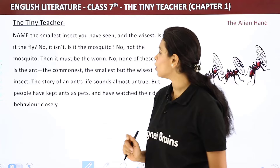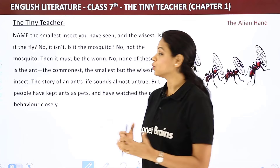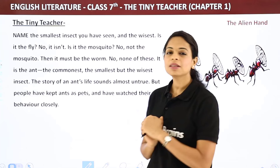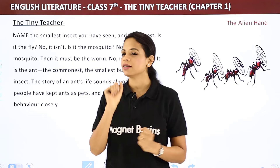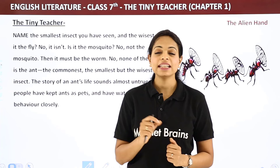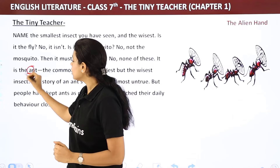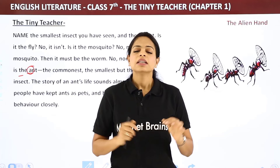Name the smallest insect you have seen and the wisest. Is it the fly? No. Is it the mosquito? Not that either — though the mosquito is quite intelligent, finding a way to bite no matter how many layers you wear! Not the worm either. It is the ant. Since 'a' is a vowel, we say 'an ant.' The ant is the commonest, smallest, but wisest insect.